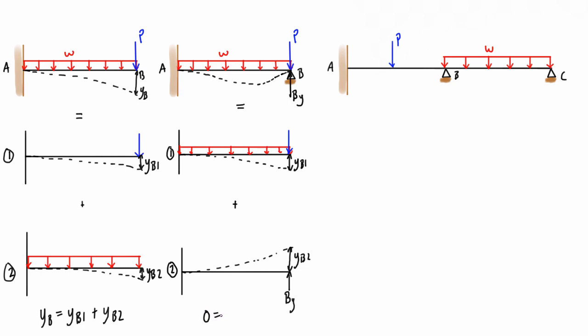We write that zero equals YB1 plus YB2. Now you find the deflection caused by the applied loads — that will be a known value — and add it to an expression for the deflection due to BY, which you can get from a table value for a point load at the end of a cantilever beam. That expression will be in terms of BY and the length, and the only unknown is the magnitude of BY, which you can solve for easily.